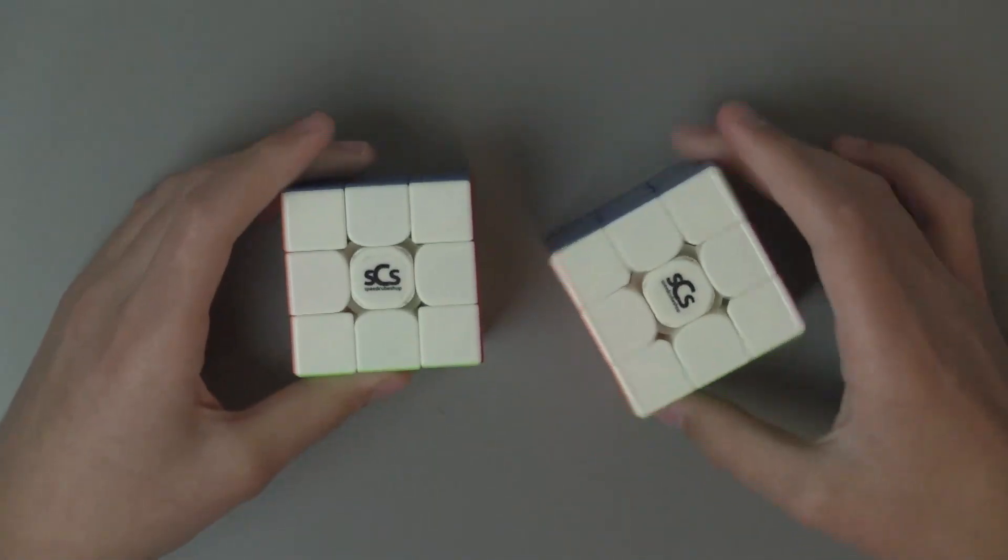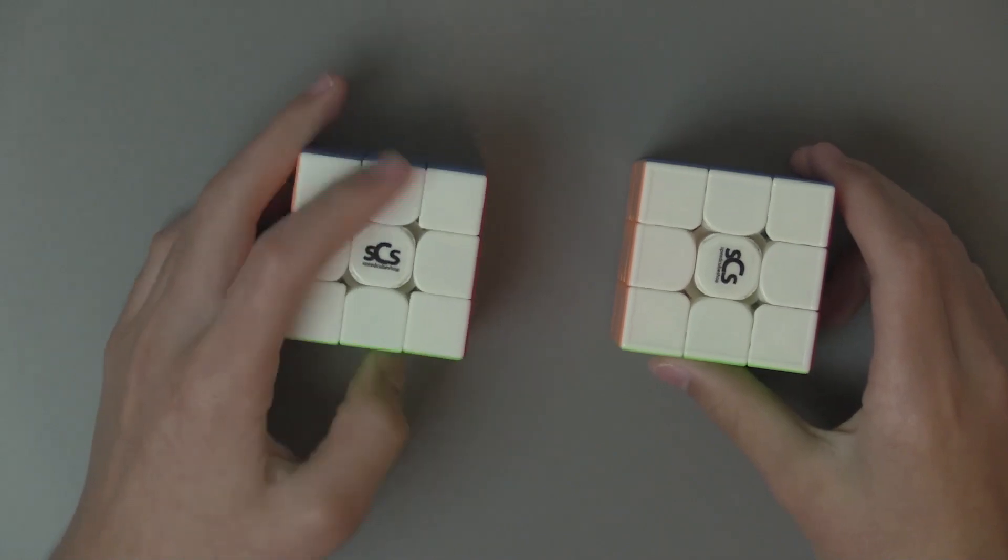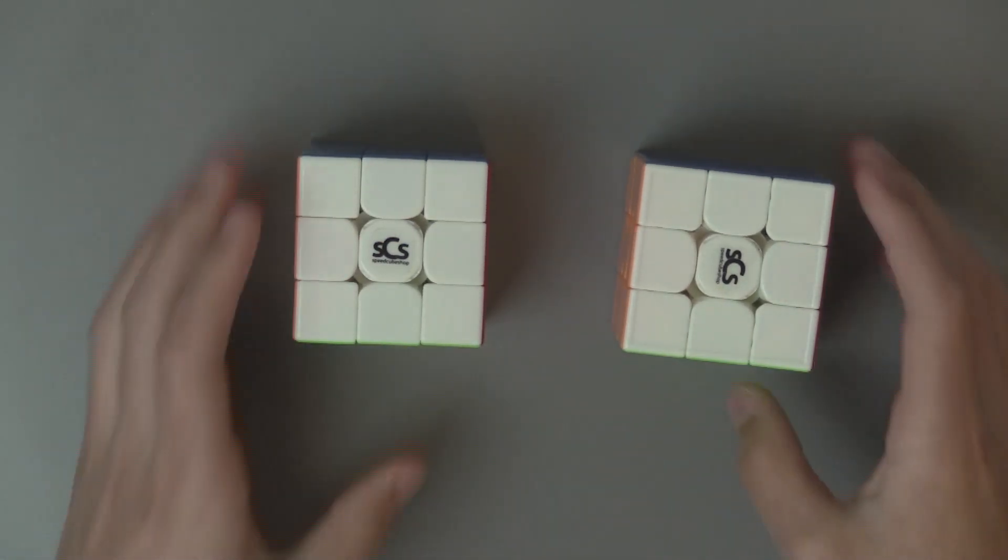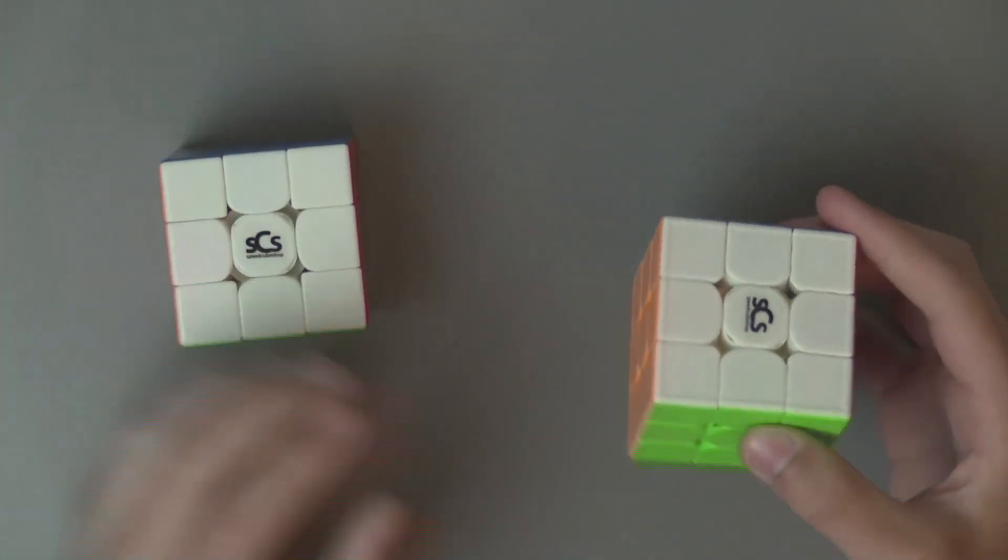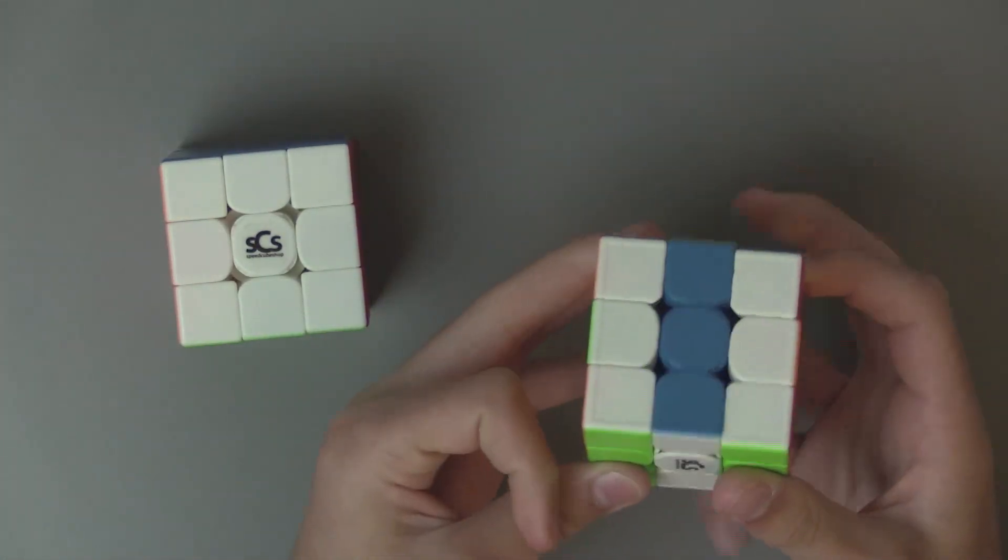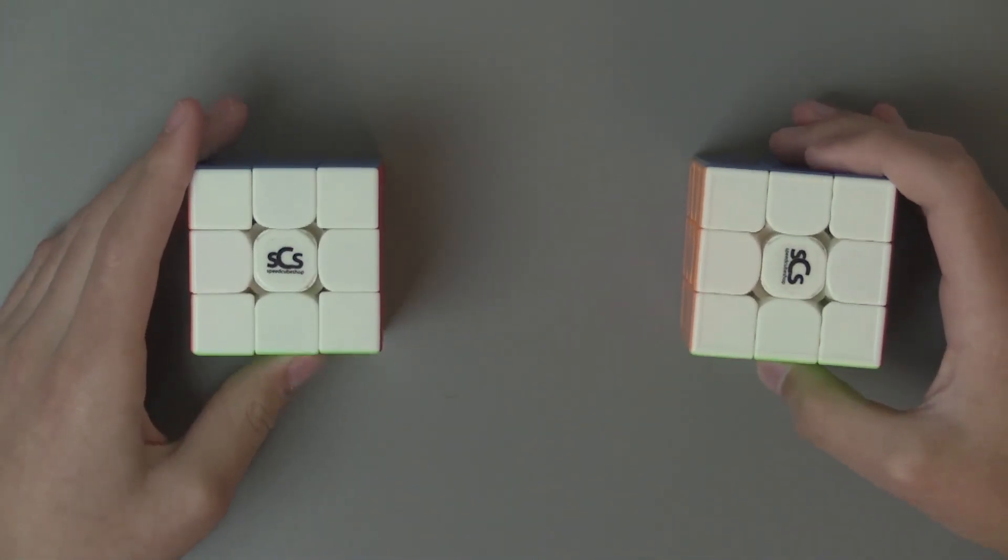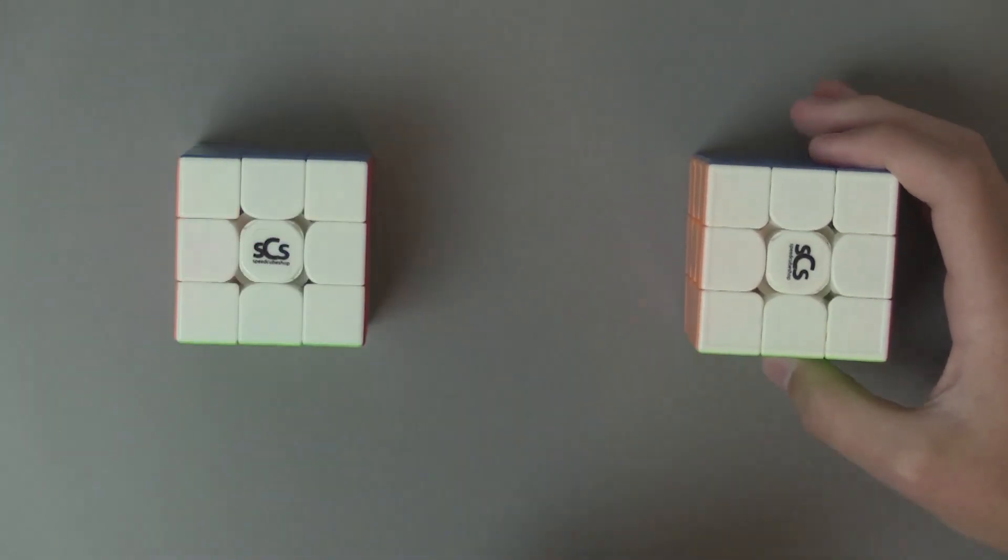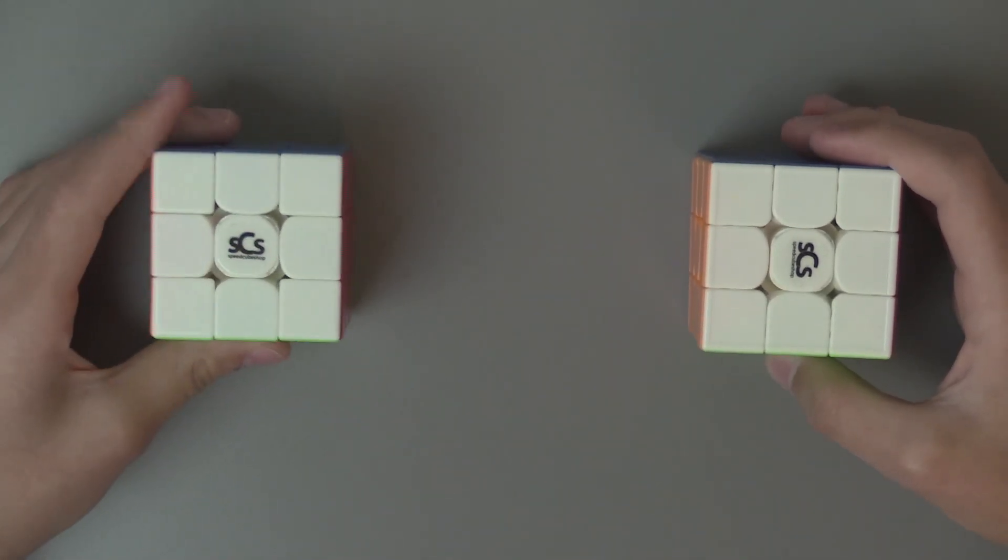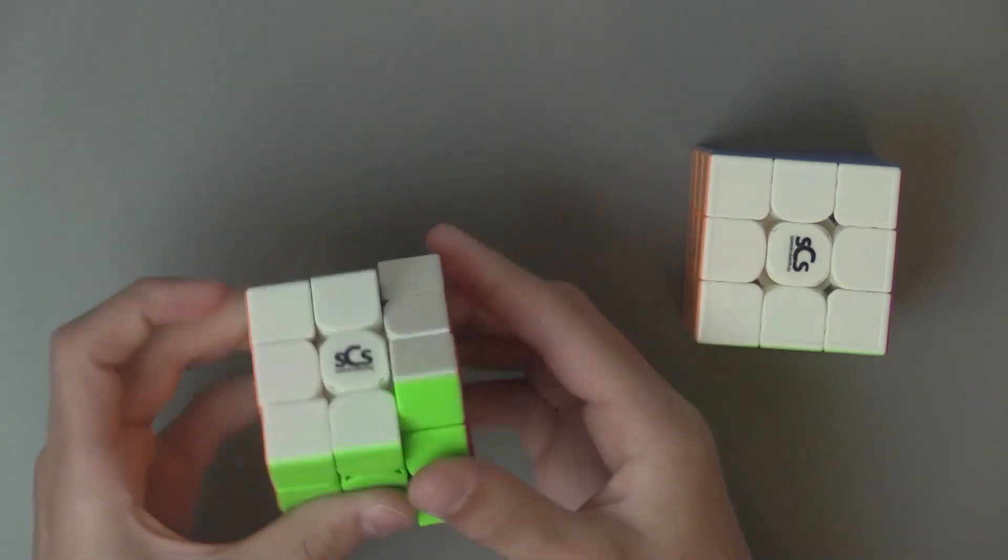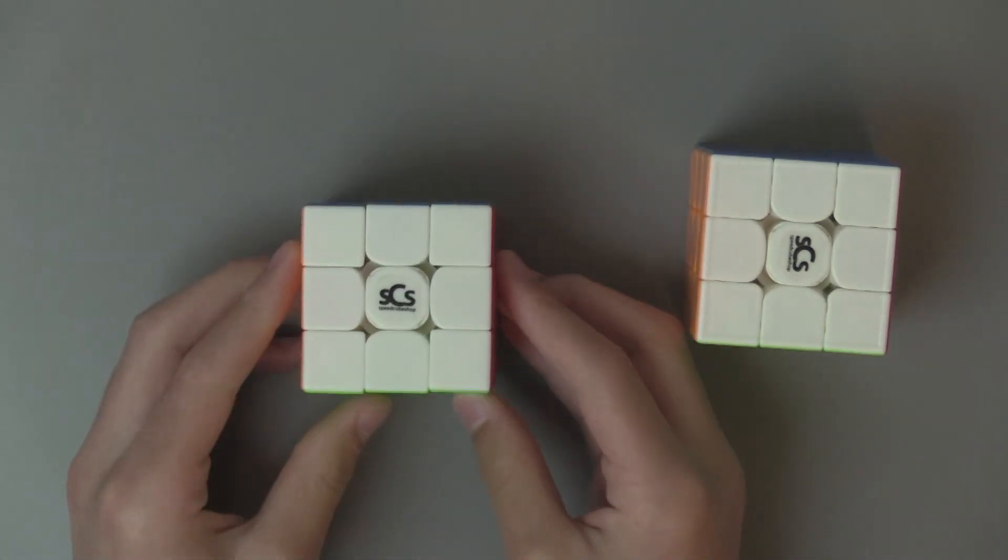So the final thoughts, I'm going to do some algorithms and see and show you how they differ. But I just enjoy the GTS-3M more than the WRM because I feel like, even though it's looser, it feels a little more stable. And the corner cutting, you're not really giving up the stability in return for the corner cutting on the WRM. I think you're giving up, if you want to make it have really good corner cutting, you have to give up a lot of stability.